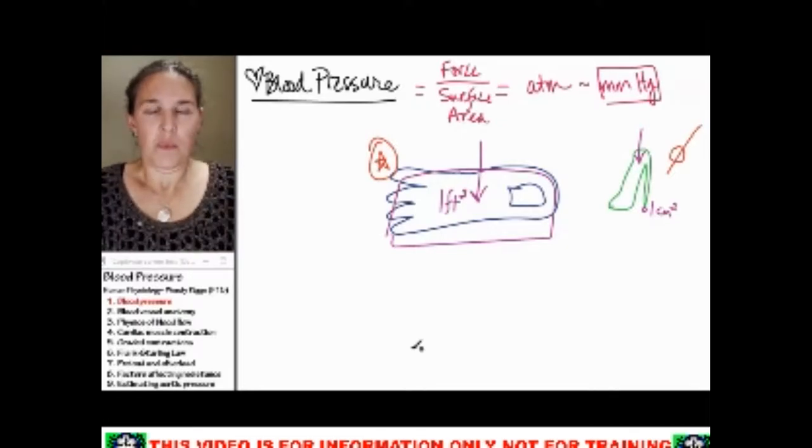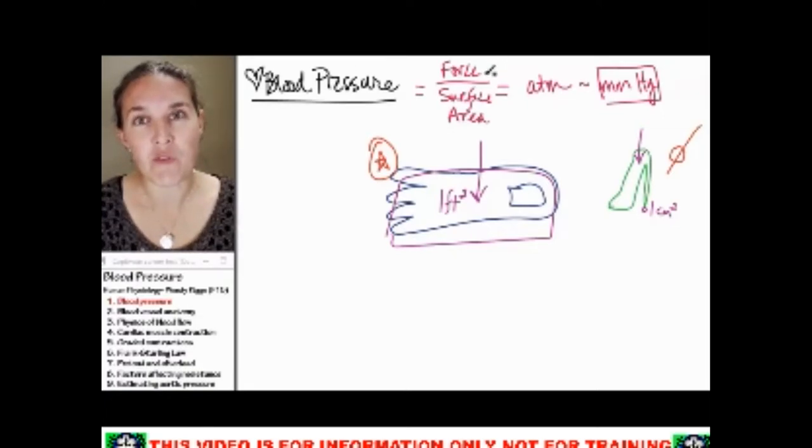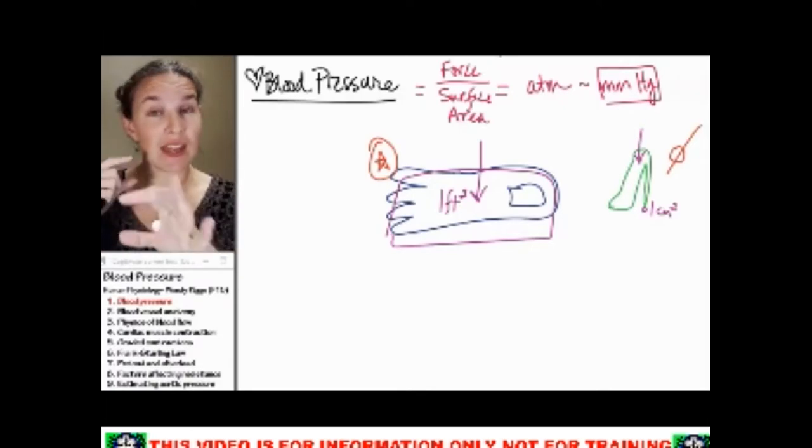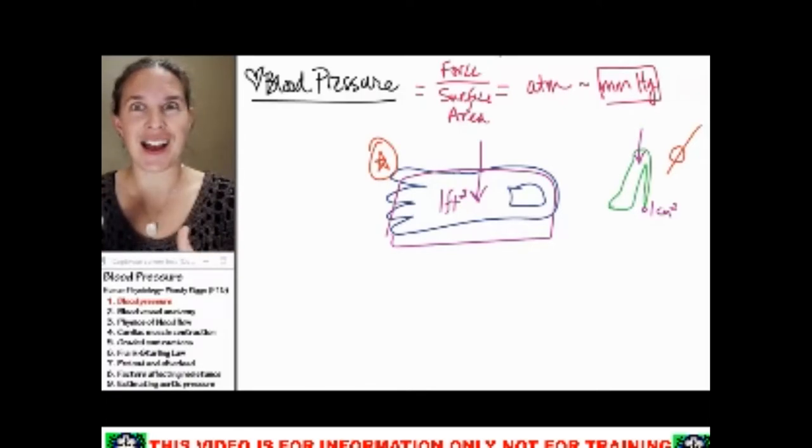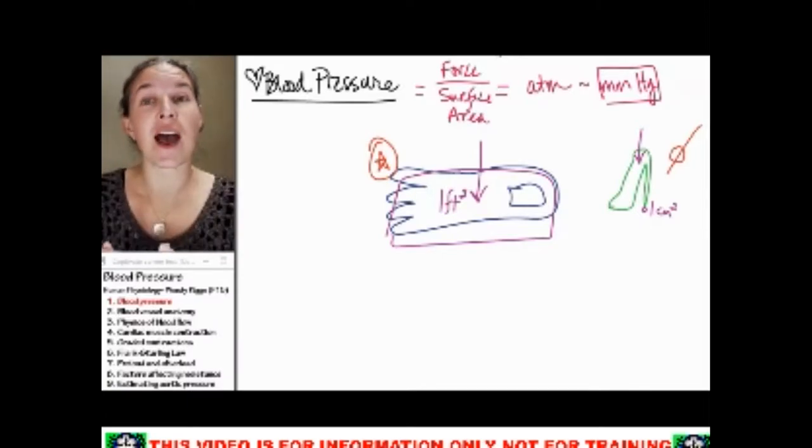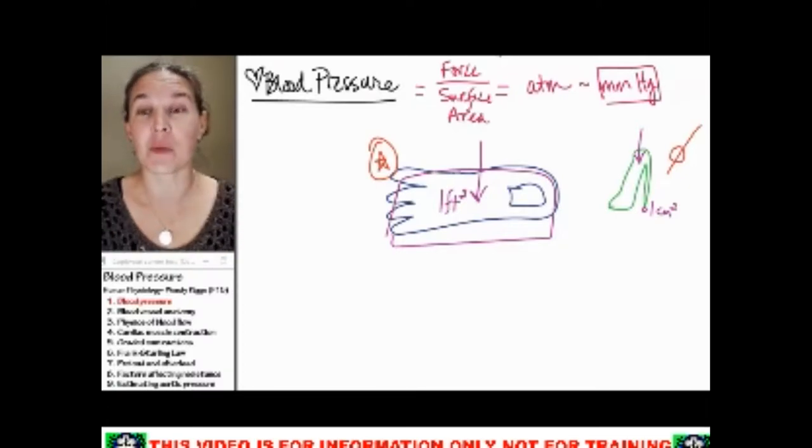Now, pressure of fluid. Fluid can apply a force, especially to the walls of the tube that it is contained by. And then the amount of surface area in that wall, that's going to be the measurement of blood pressure. Our units for blood pressure are going to be millimeters of mercury.